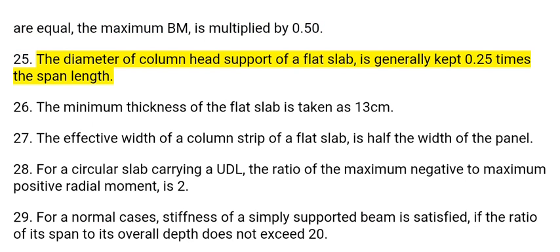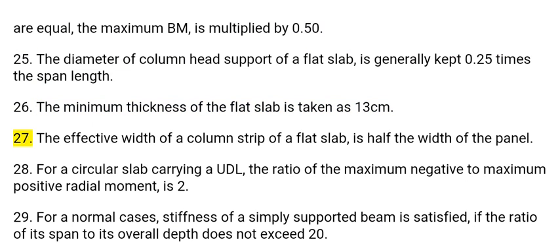25. The diameter of column head support of a flat slab is generally kept 0.25 times the span length. 26. The minimum thickness of the flat slab is taken as 13 cm. 27. The effective width of a column strip of a flat slab is half the width of the panel.